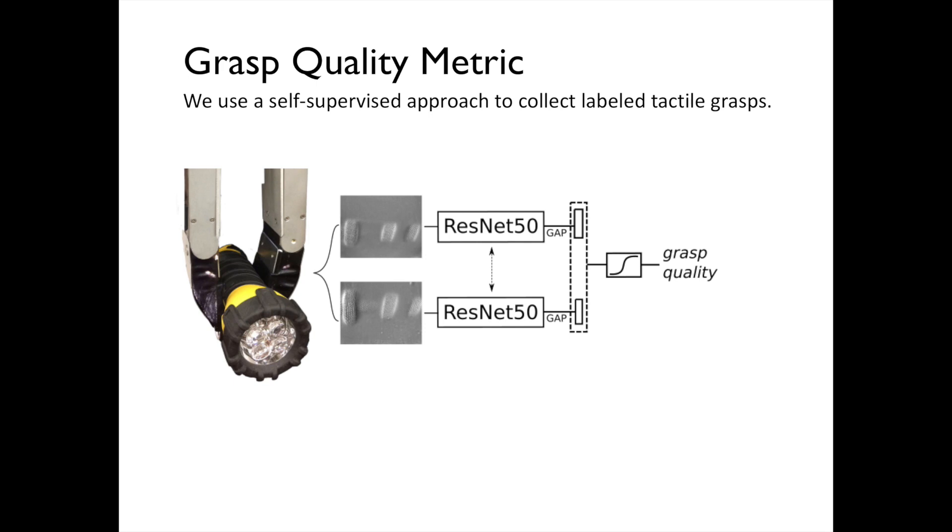The tactile images are processed by a shared convolutional network architecture that outputs a continuous value between 0 and 1, denoting how likely a grasp is to succeed.